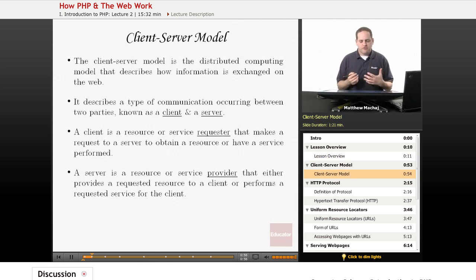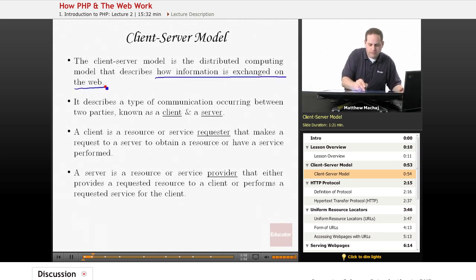So first off, the client-server model is basically a distributed computing model that describes how information is exchanged on the web or over a network. It describes communication between two different parties, one known as a client and one known as a server.